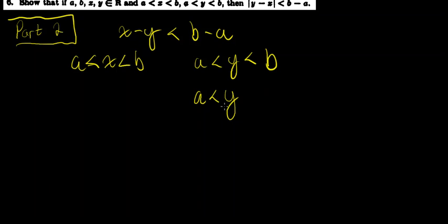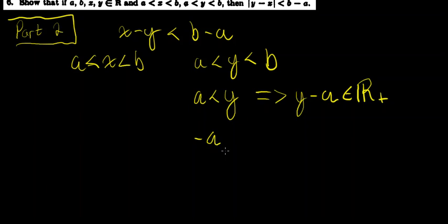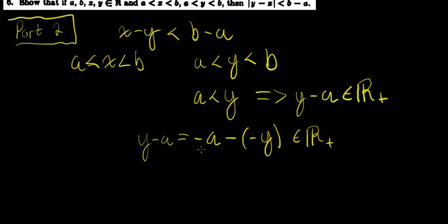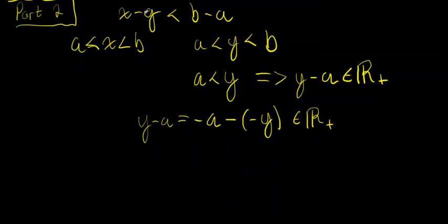By that property in red: if A is strictly less than Y, then Y minus A is in the positive real numbers. Let's rewrite this in a non-intuitive way — the same technique as before. This is the same as saying negative A minus negative Y is in the positive real numbers, because negative A minus negative Y equals Y minus A. Since Y minus A is in the positive real numbers, negative A minus negative Y is also in the positive real numbers.